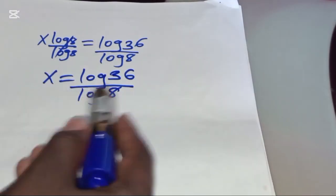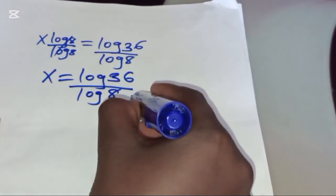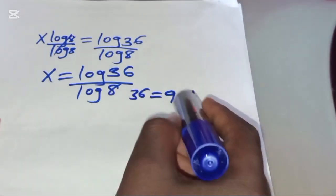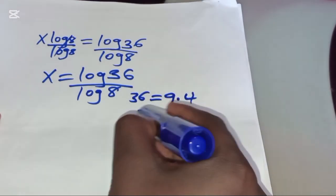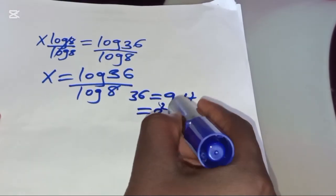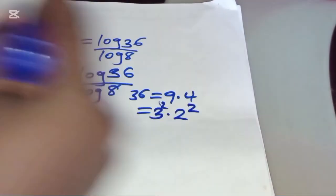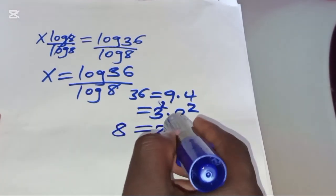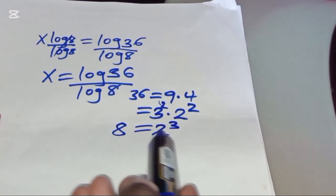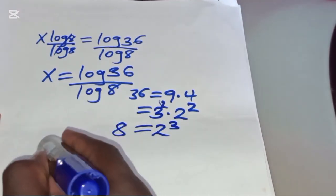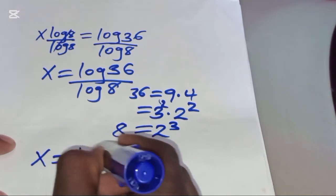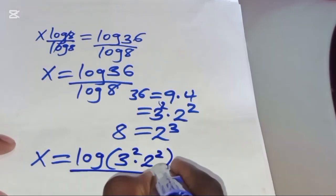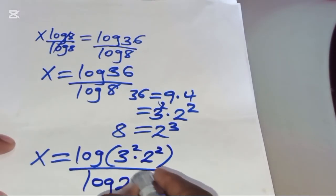Now from what we have here, we can express 36 as 9 multiplied by 4. We can reduce this further: 9 can be expressed as 3 to the power 2, multiplied by 4, and 4 can be expressed as 2 to the power 2. In addition, we can express 8 as 2 to the power 3. Now substituting this, x can be expressed as log of 3 to the power 2 times 2 to the power 2, divided by log of 2 to the power 3.